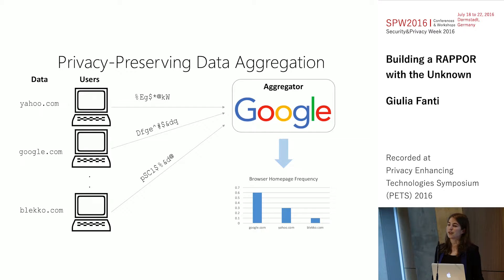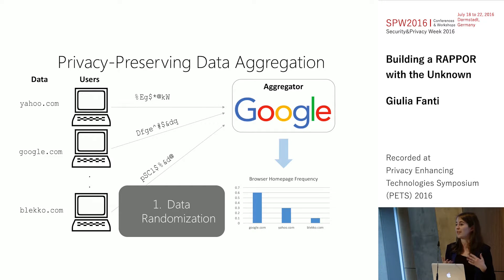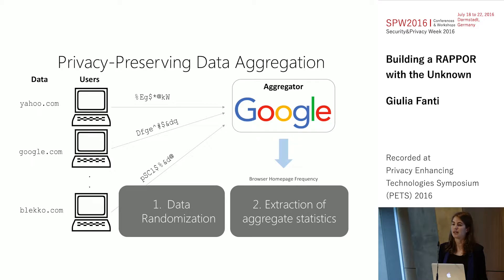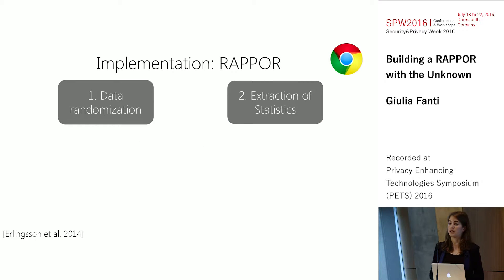There are two main components in this pipeline. The first is the data randomization phase — choosing how to add noise to your data and how much noise to add. The second phase is actually extracting useful statistics from that noisy data. In this talk, I'm going to focus mainly on phase two: given a fixed data randomization scheme, how can we increase the utility of this pipeline? In particular, I'm going to focus on the system called RAPPOR, which was recently deployed in Chrome.